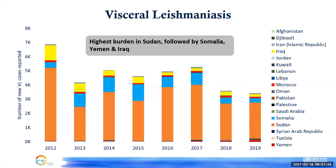Comparing support for visceral versus cutaneous leishmaniasis: WHO support for treating visceral leishmaniasis is greater than for cutaneous leishmaniasis. Donors have agreed to supply very effective treatments like ambisome free of charge to African countries with a high burden of visceral leishmaniasis. But for cutaneous leishmaniasis, the story is not the same — donors don't pay much attention, and this is one of the major problems we face in our region.